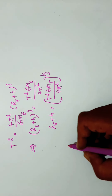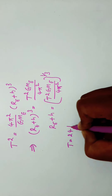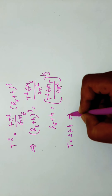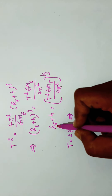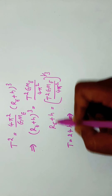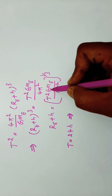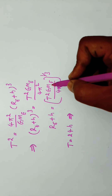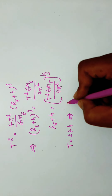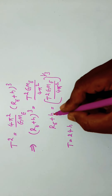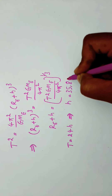The time period of a geostationary satellite T equals 24 hours. Using this equation, with the radius of the Earth, universal gravitational constant G, and mass of the Earth all known, substituting T equal to 24 hours, we can calculate the height of geostationary satellites. That height is 35,800 km.